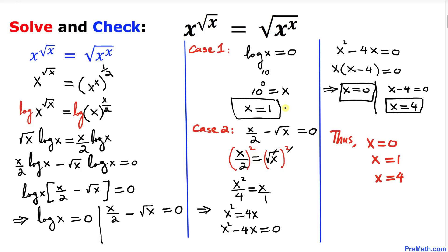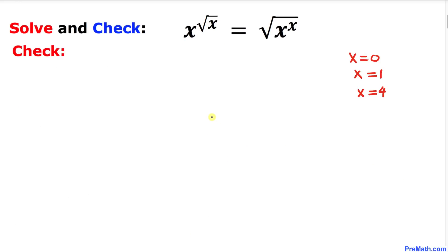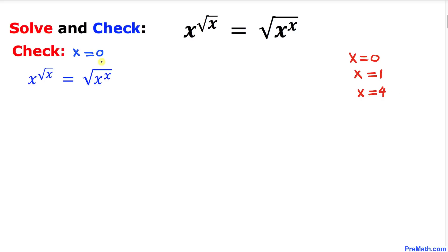So in total we have three solutions: x equal to 1, x equal to 0, and x equal to 4. Now we are going to check which ones actually work. Let's go ahead and check these three solutions one at a time. First, let's check x equal to 0 in our original equation.